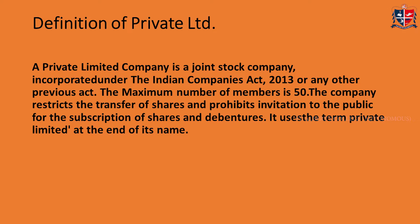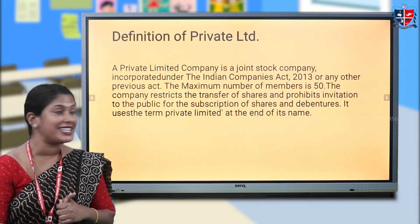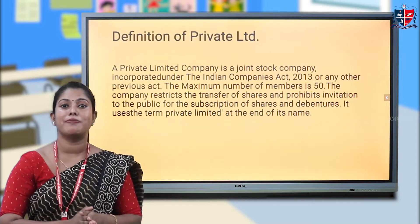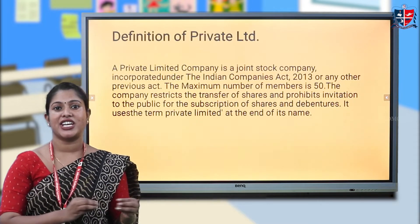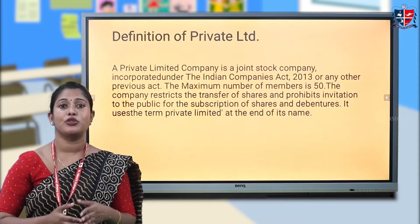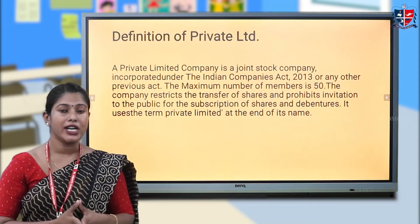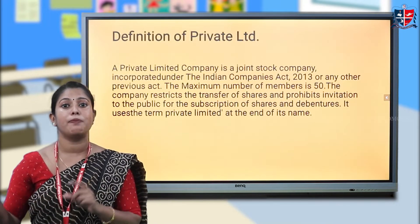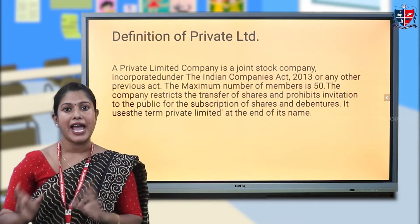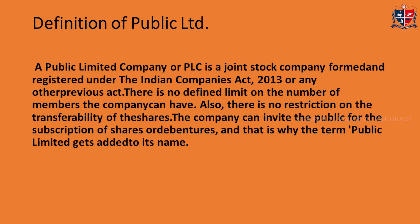A private limited company is a joint stock company which is incorporated under the Companies Act or any previous act. The maximum number of members is 50 and the minimum number is 2. In the case of transferability of shares, shares cannot be easily bought and sold. There is also a restriction on inviting the public for investment. The name of a private limited company ends with 'Private Limited' — for example, ABC Private Limited.